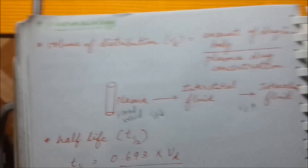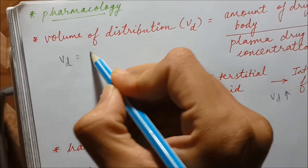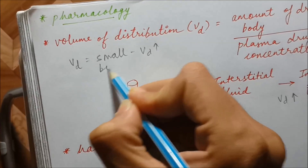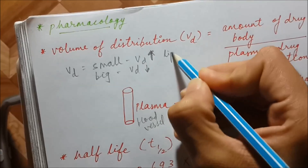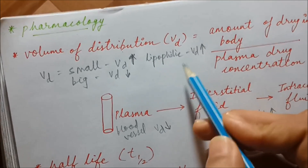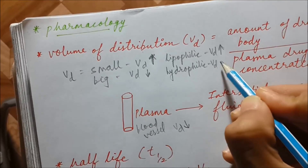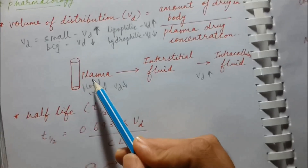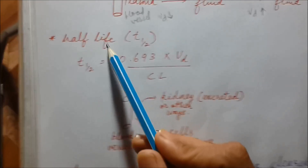Now, on what factors does the volume of distribution depend? If the substance is small, the volume of distribution will be high; if the substance is big, the volume of distribution will be less. It also depends upon charge. If the substance is lipophilic, the volume of distribution will be high — it will easily cross all membranes. If the substance is hydrophilic, the volume of distribution will be less. So if the drug is small and lipophilic, it is more likely to reach from plasma to intracellular fluid.